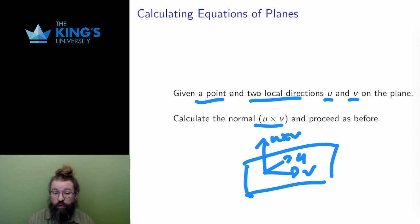Then I have a normal and a point as in the previous case, so I proceed as I did before, and I've reduced the second case to the first case.